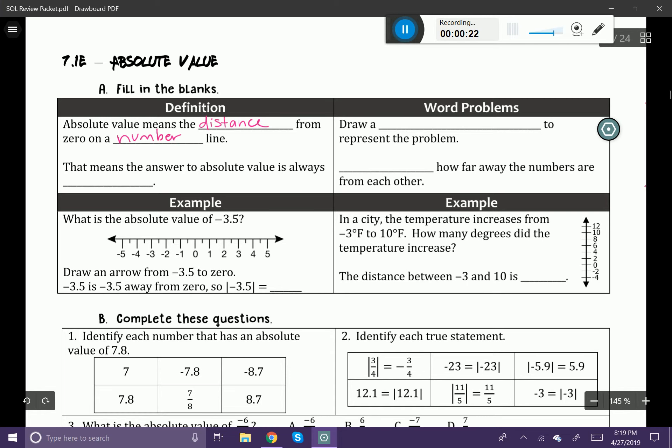That means the answer to absolute value is always positive. Let's take a look at this example here. What is the absolute value of negative 3.5? You'll see that we're given a number line here. So it says draw an arrow from negative 3.5 to zero.